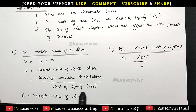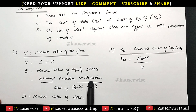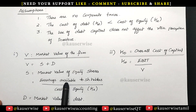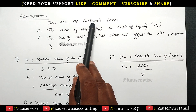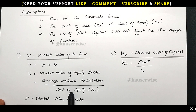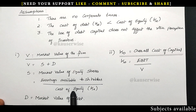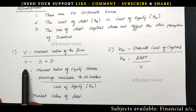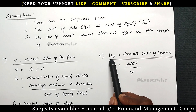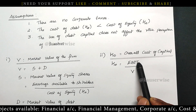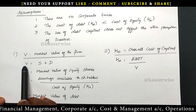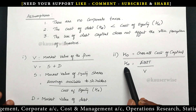KE will be given in the problem. To find earnings available to equity shareholders, the formula is EBIT minus interest. Since there is no corporate tax under the net income approach, after paying interest the entire remaining profit is available to equity shareholders. Divide that by KE to get S, then add D to get V. The second component is KO, the overall cost of capital. KO equals EBIT divided by V, multiplied by 100. After finding V, you can apply this formula to find the overall cost of capital.